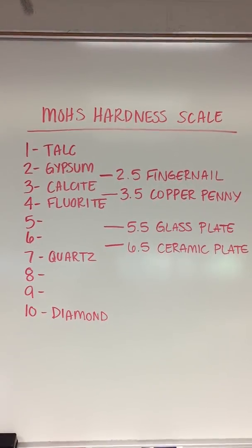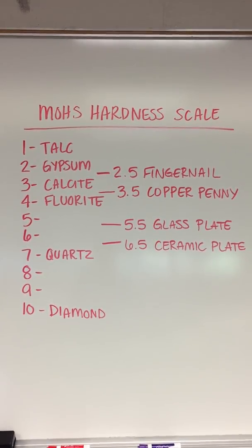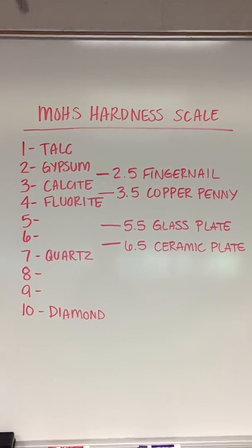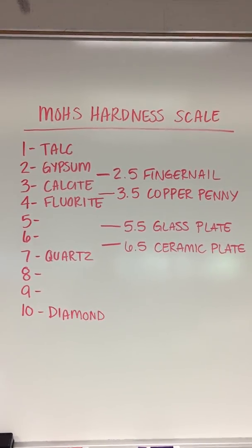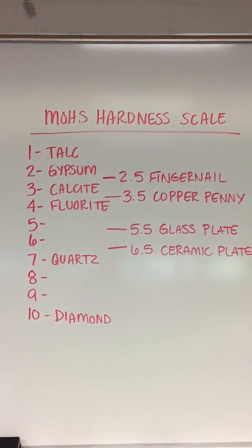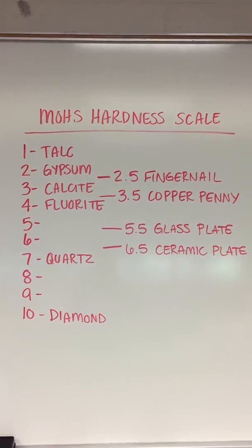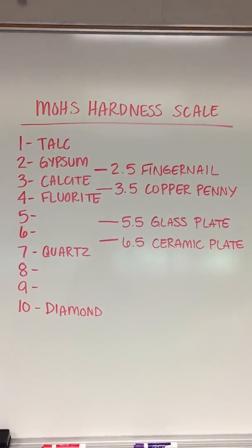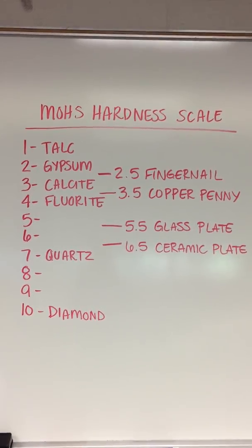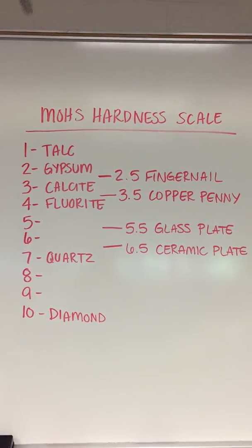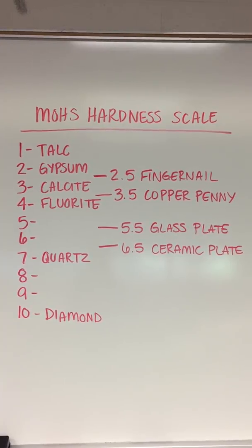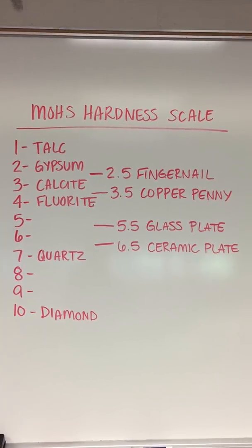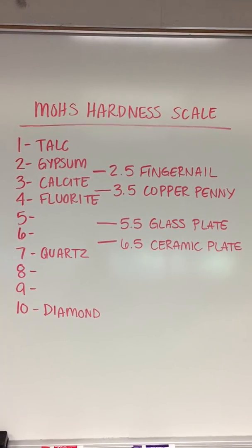When you're trying to determine the relative hardness of a mineral, you use those tools to get your range of hardness. So obviously, if it scratches a penny then it's harder than 3.5. But if it doesn't scratch the glass plate, then it's softer than 5.5 — so probably the range of hardness for that mineral would be about a 4 or 5.